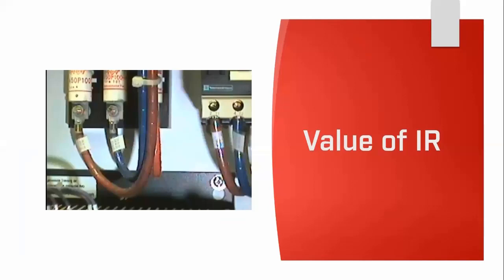Looking at the value of infrared: in a daylight picture of an electrical installation, we can visually check for discoloration on components and cables indicating elevated temperature. But from the daylight picture alone, we aren't able to tell if the target is hot or cold, or whether it's good or bad.